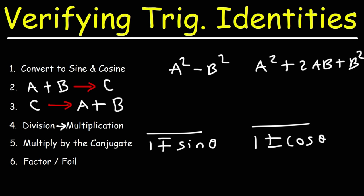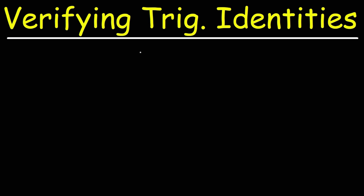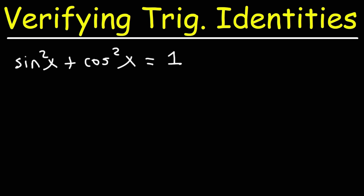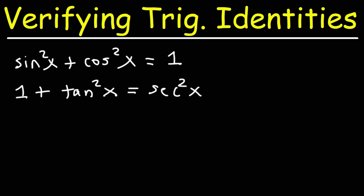Before we begin working on practice problems, you may want to take down some notes — I recommend writing what you see on the board. The first identities to know: sine squared plus cosine squared equals one. That's a very common one. And one plus tangent squared equals secant squared. Commit these identities to memory because you'll be using them a lot.